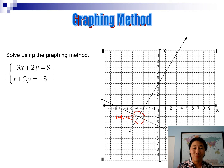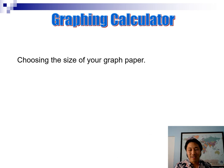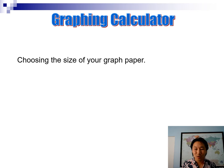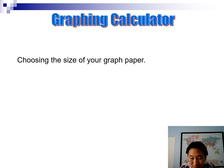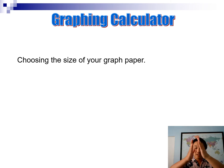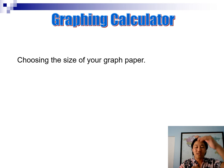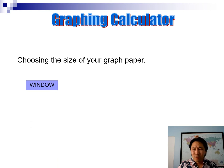Let's practice using the graphing calculator. One thing you get to do on a graphing calculator that you can't do with regular graph paper is choose the size of the graph. On regular paper it's just the size you buy, but on the calculator it could be 10 by 10, a thousand by a thousand — you choose.